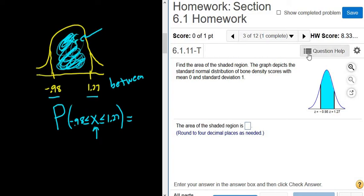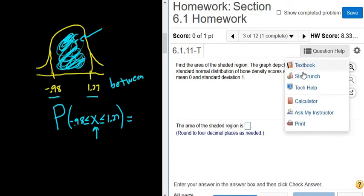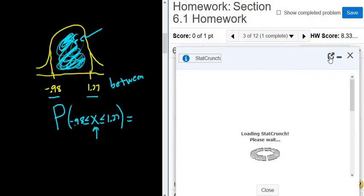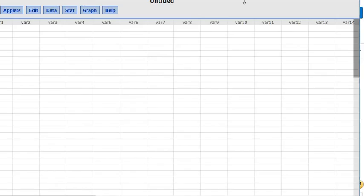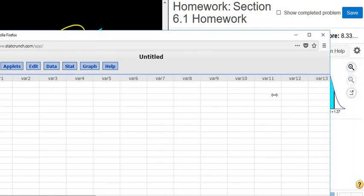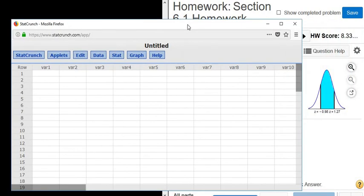So all we have to do is go to StatCrunch. So I'm going to go to question help, StatCrunch. Now I'm going to click this little arrow here to detach it to make it easier to see. I'm going to fix it so you can see it.